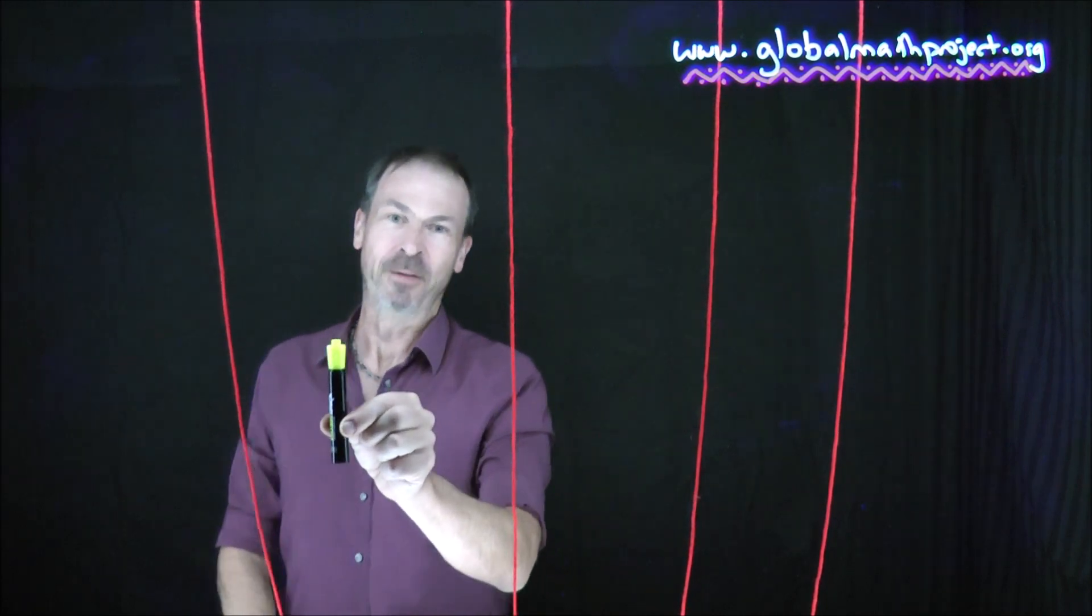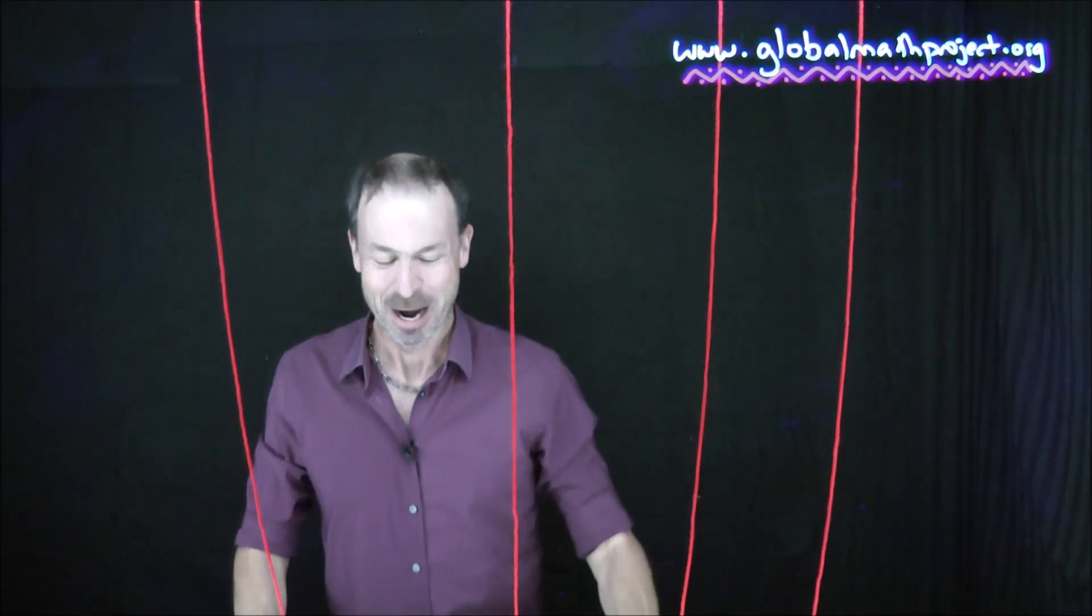Same thing with two full turns is as though the marker did nothing. Two full turns seems to be equivalent to one full turn, which seems to be equivalent to zero full turns. They all seem to be equivalent. Well, that is an illusion because here's something mind blowing. One full turn is fundamentally different from doing two full turns. Here's why.